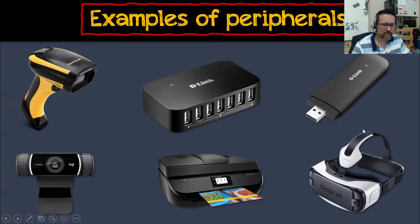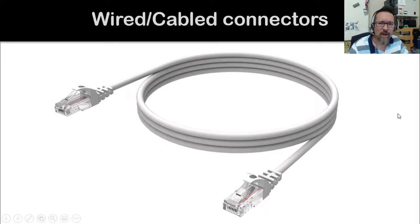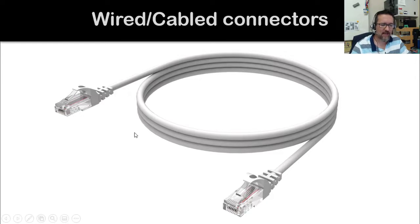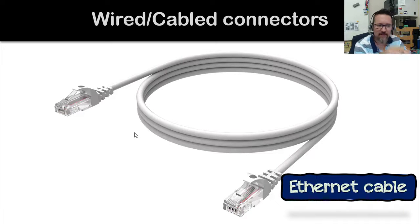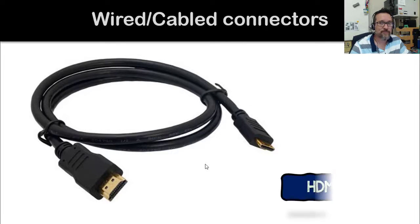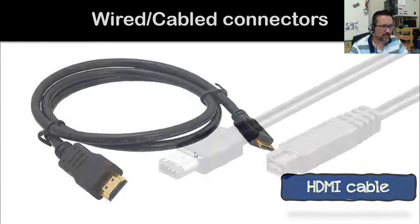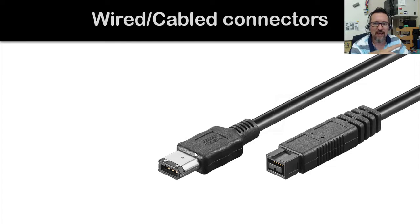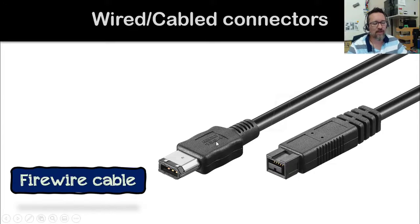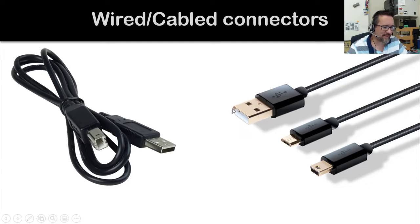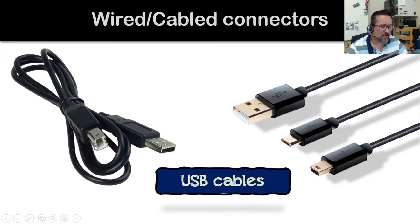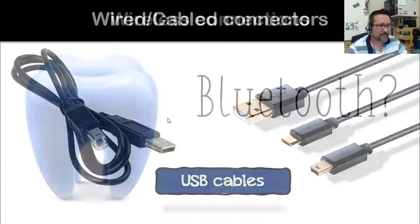Let's look at how we connect things to our computers — wired first, then wireless. For wired connections: here's an Ethernet cable with connectors on each side; here's an HDMI cable; and here's the IEEE 1394 FireWire cable. Of course, there's also the good old standard USB cable, and the USB-B cable often used for printers.